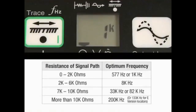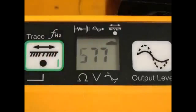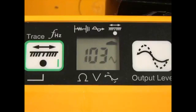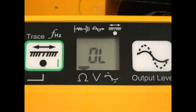In the previous example, the resistance of the signal path was 1 k. Based on the reference chart, the optimum frequency for this locate would be 577 Hz. You should always select the lowest frequency applicable to the resistance of the signal path, because the lower the frequency, the less chance of bleed over signal to adjacent facilities. If the resistance of the signal path is greater than 10 k, or if the ohmmeter displays OL, this could be an indication of an open line or that the return path through the ground is very marginal or nonexistent.